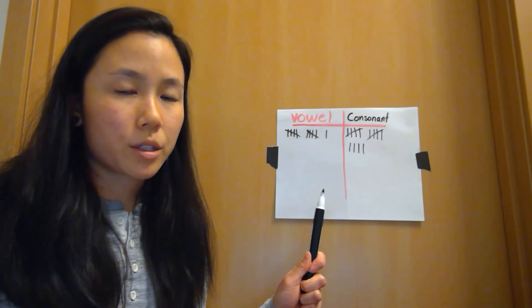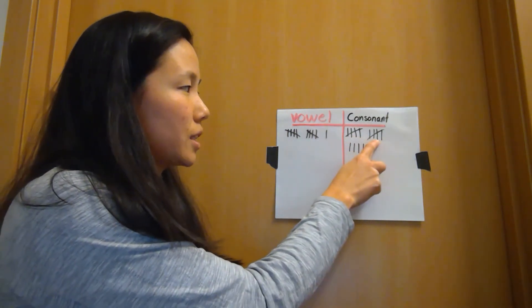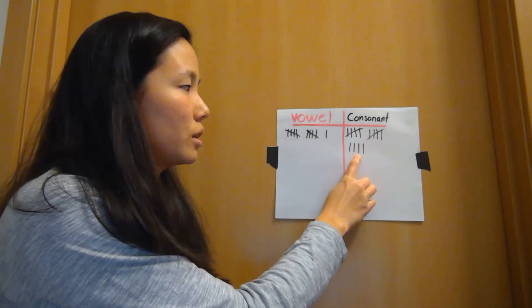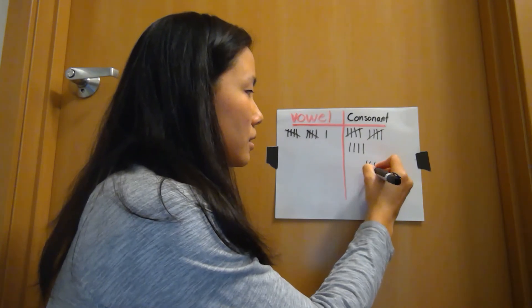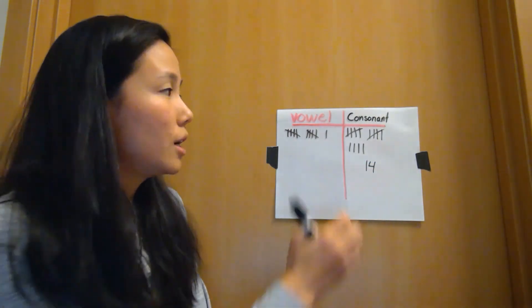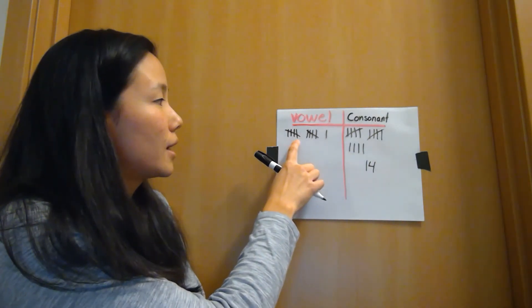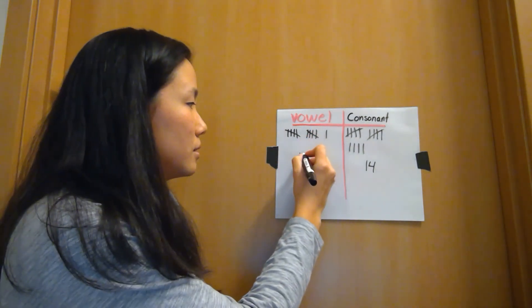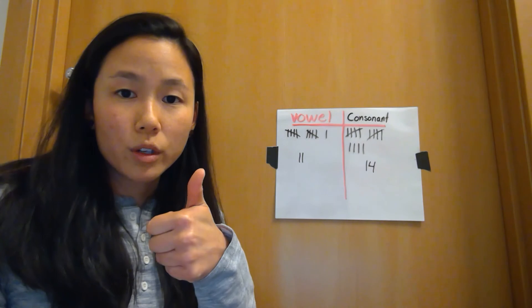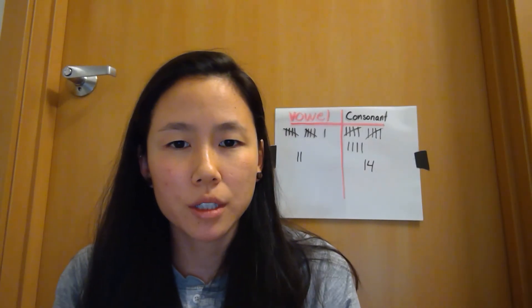These are the numbers I came up with. I counted 14 consonants — I did count Y as a vowel, just so you know. And I counted 11 vowels. Give me a thumbs up if you got those same numbers. You did a great job today! Thanks for following along, and I hope to see you at our next video.